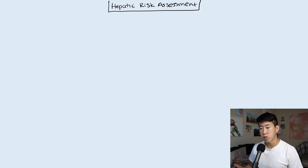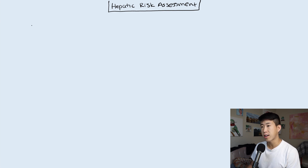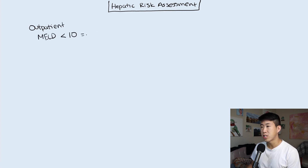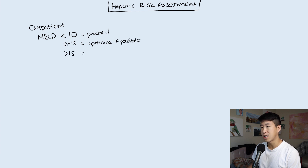For hepatic risk we are really talking about patients with cirrhosis, and there are a lot of things we need to optimize before surgery. For outpatient assessment, we check the MELD score. If the MELD score is less than 10, the patient can proceed to surgery. If it's between 10 and 15, they can proceed but you'd want to optimize them further. If it's greater than 15, they should not proceed to surgery.